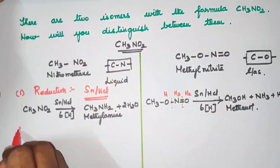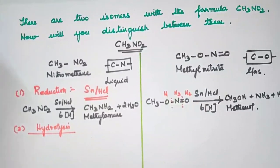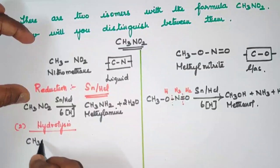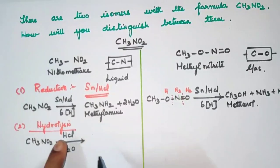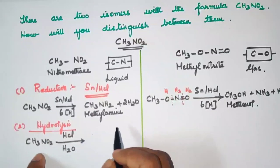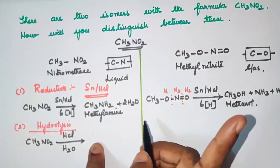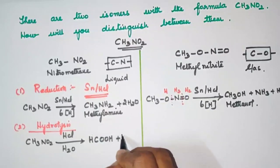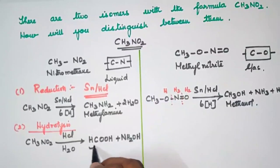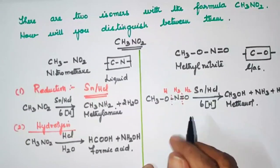Another important reaction is hydrolysis. For hydrolysis of nitromethane, we use HCl acid, add and boil the mixture. With acid hydrolysis, only one carbon atom exists, so the product is formic acid (methanoic acid, HCOOH) and also NH₂OH (hydroxylamine).